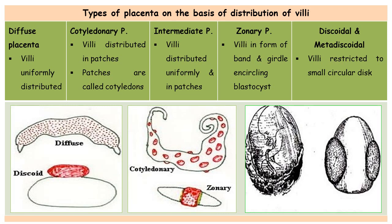The next type is the intermediate placenta, where the villi are distributed both uniformly and in patches. Uniform distribution is present all over the surface of the blastocyst, but at some points, the villi are also found in groups or patches. It has the nature of both diffuse and cotyledonary placenta. This type is called intermediate placenta and is found in the camel and giraffe.